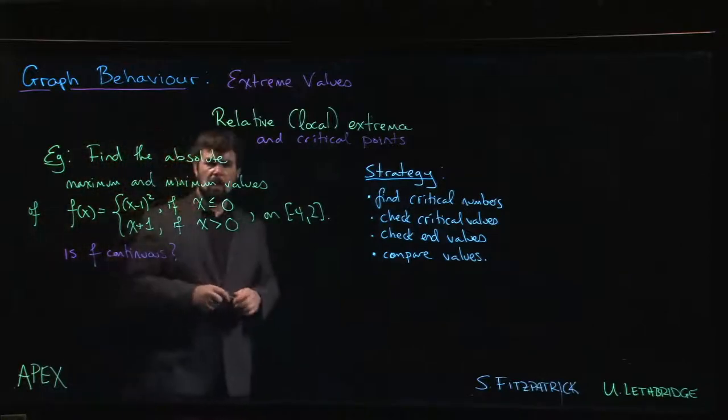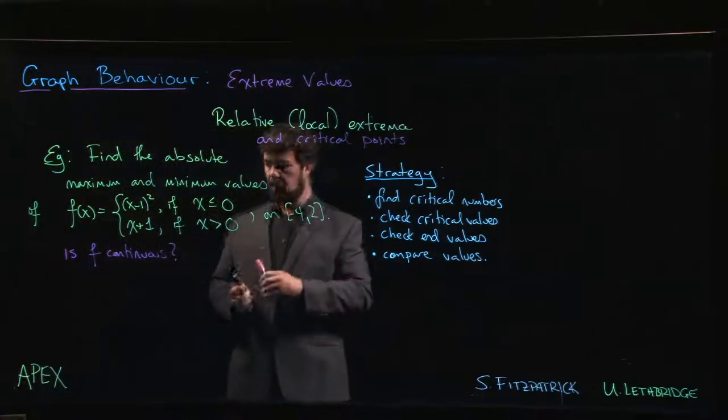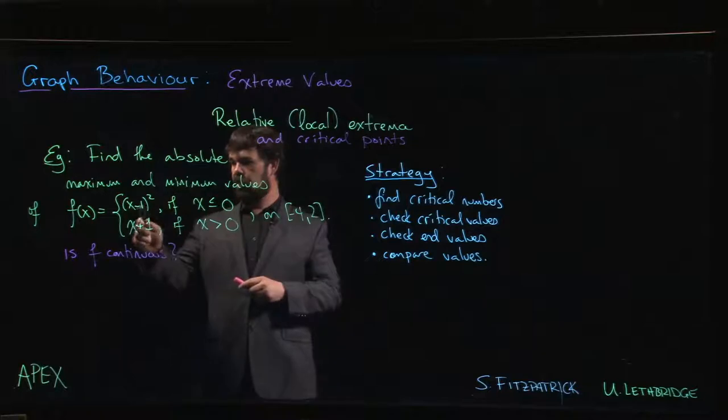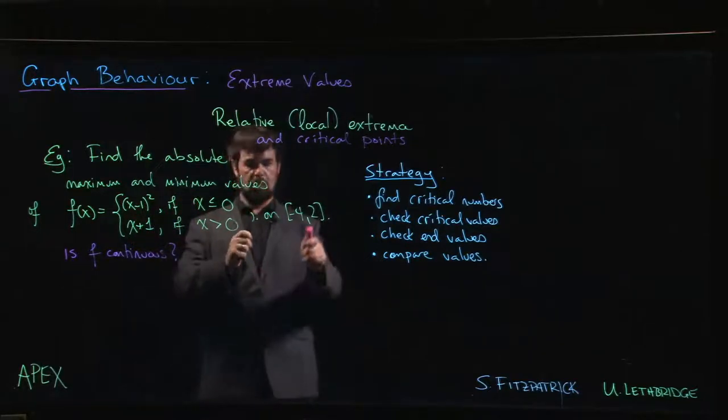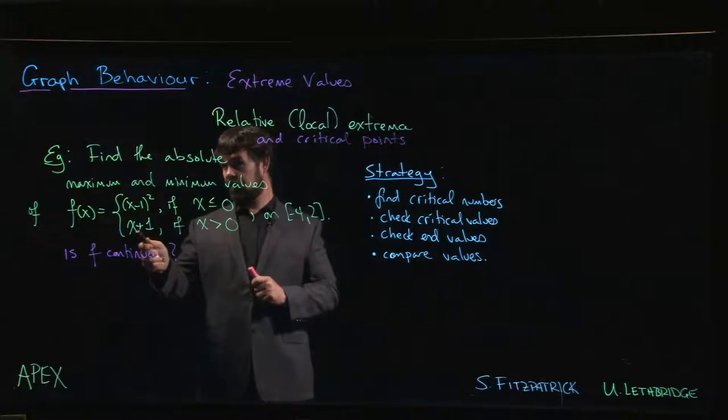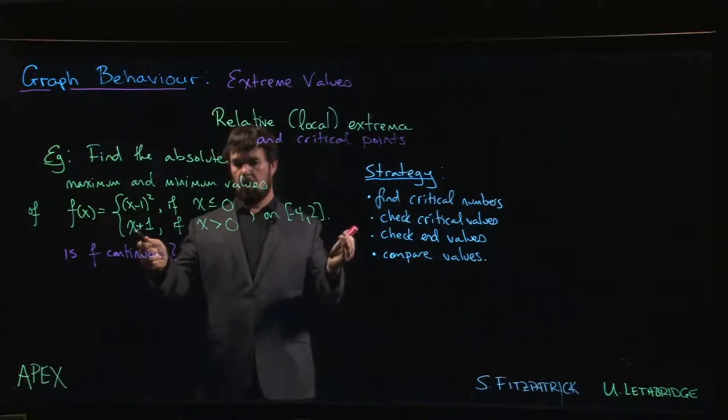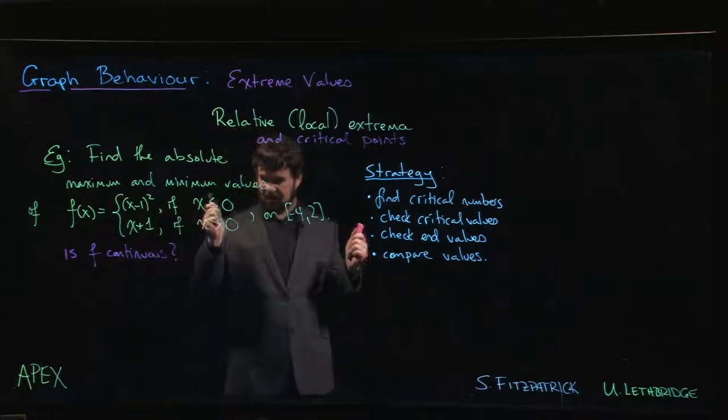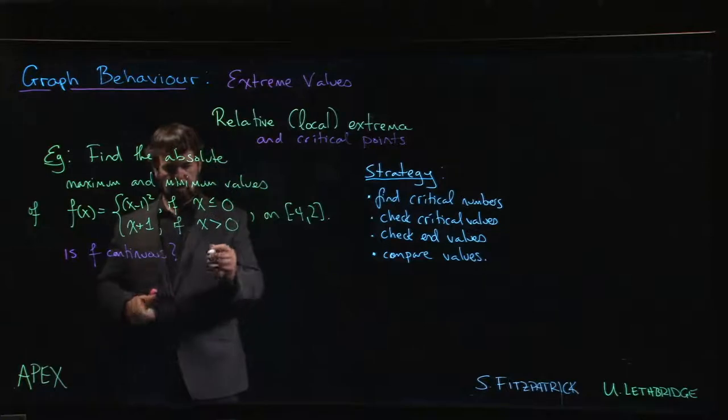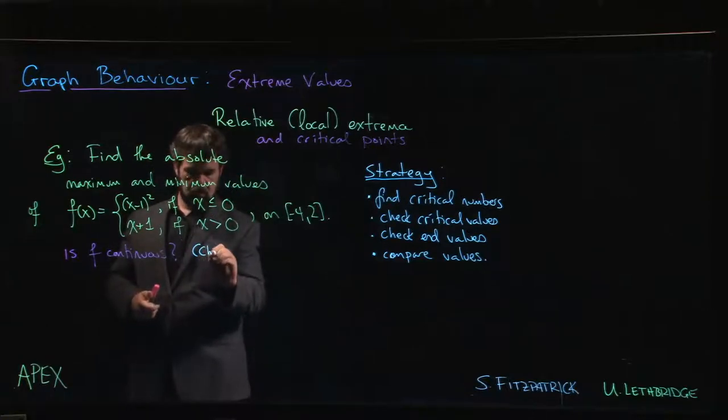Okay, well we certainly know that it's continuous from minus 4 to 0 because it's given by a polynomial there. We know it's continuous from 0 to 2 because it's again given by a polynomial, in fact a linear function. What we don't know is whether it's continuous at 0, right? So we need to check what happens at 0.